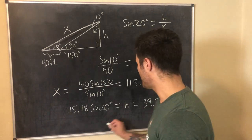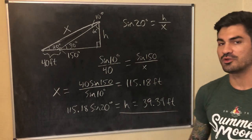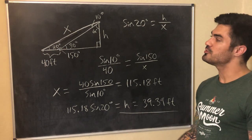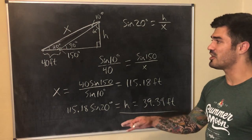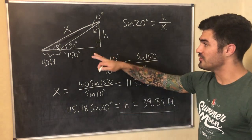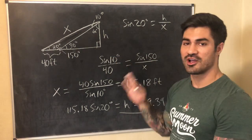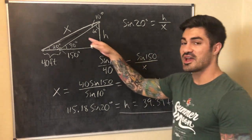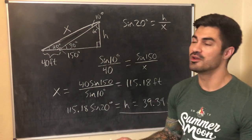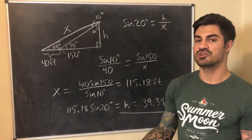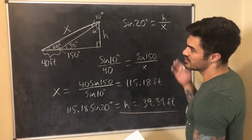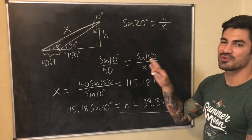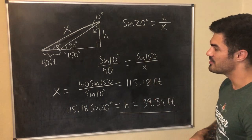This problem was pretty involved and there are several ways to approach it. Note that you can also use the law of sines even when there is a right triangle — you'll end up with sine of 90 which equals 1, so it reduces to the same thing as SOH-CAH-TOA. You can always use the law of sines, but SOH-CAH-TOA only works with right triangles.